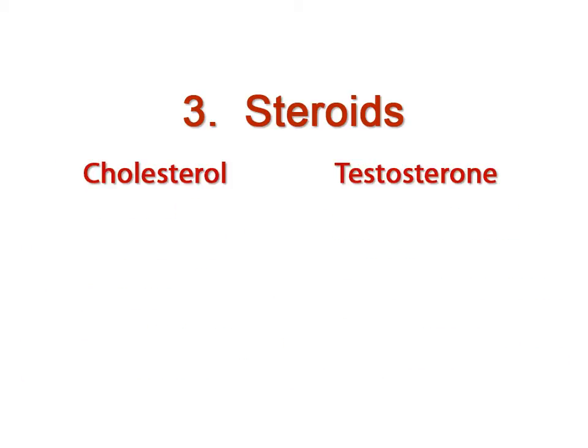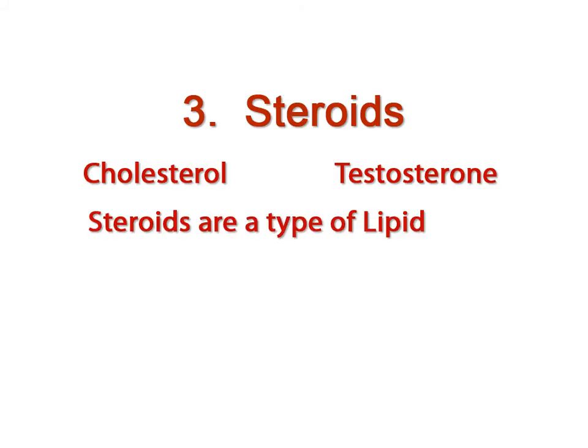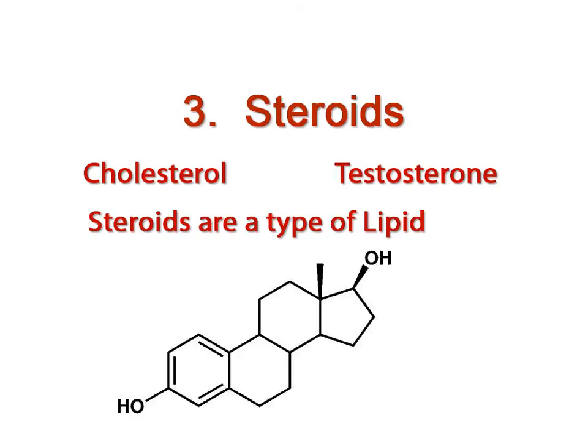For the steroids, you need to be able to classify cholesterol and testosterone as a steroid and know that steroids are classified as a type of lipid. You will also have to be able to identify the general structure of a steroid. Steroids are made of three six-carbon rings bonded to one five-carbon ring. All steroids have this basic skeletal structure.